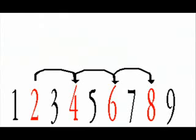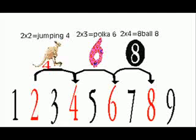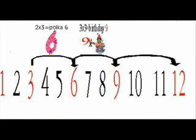Timetables are simply counting every other number, or skip counting, like 2, 4, 6, 8, or 3, 6, 9, 12.